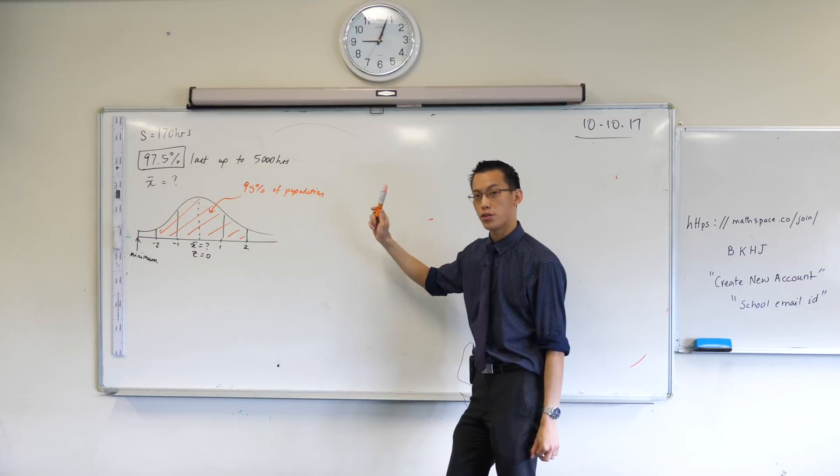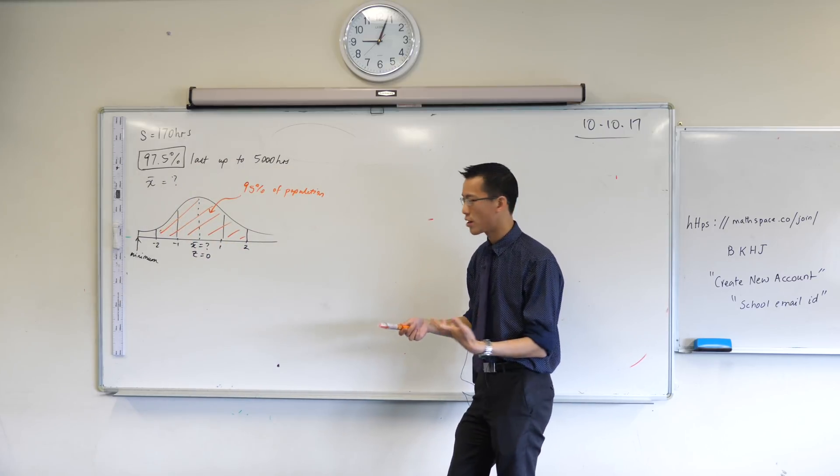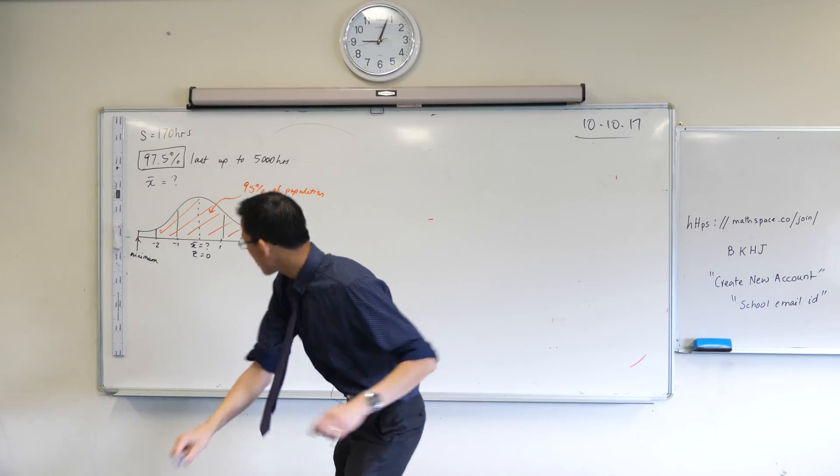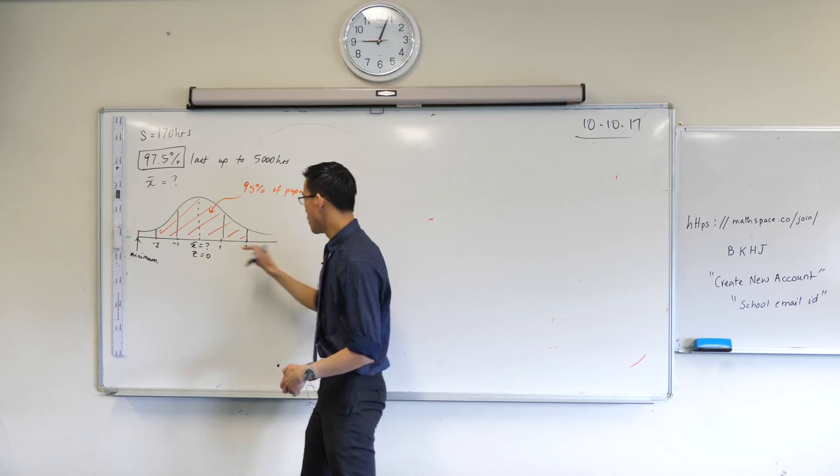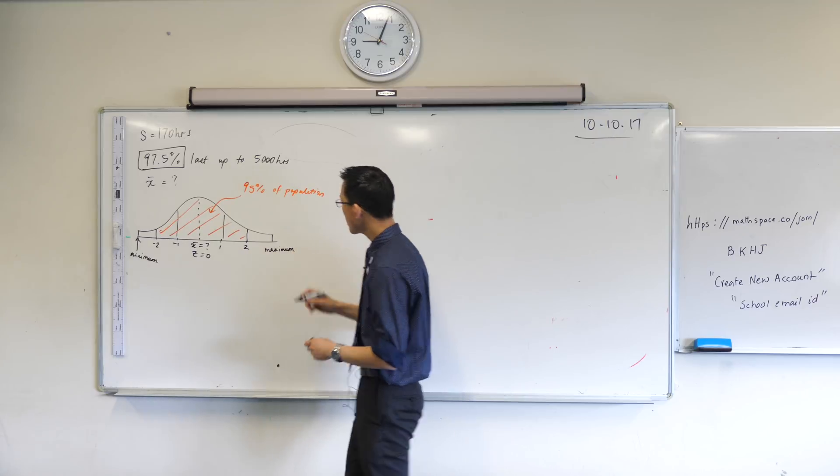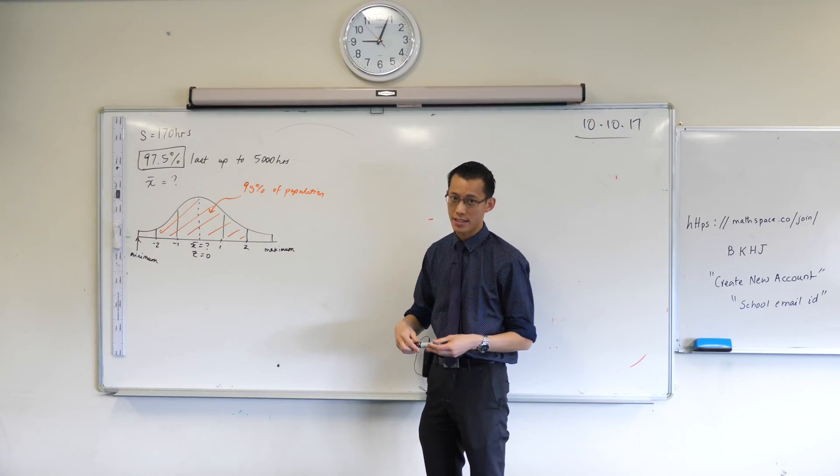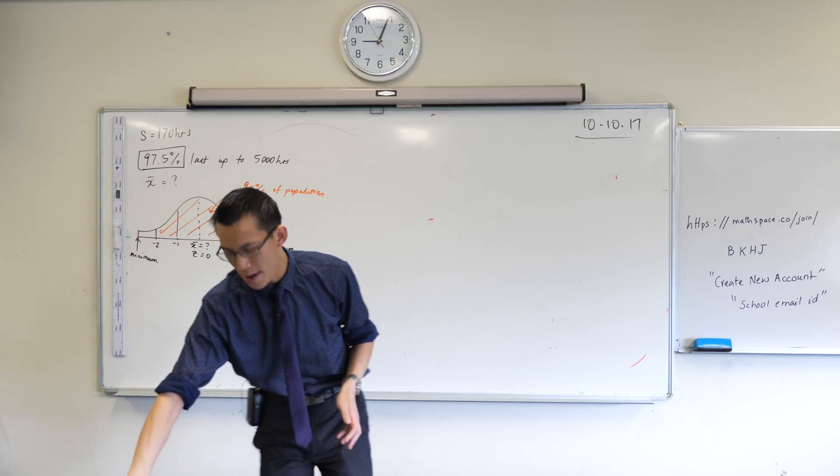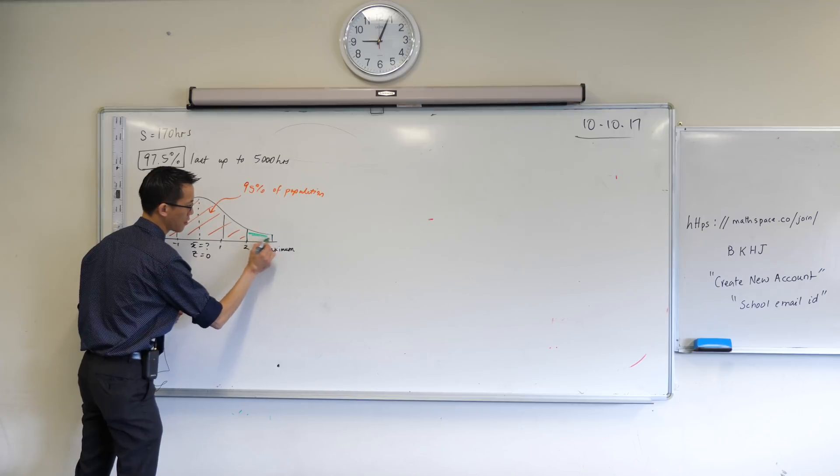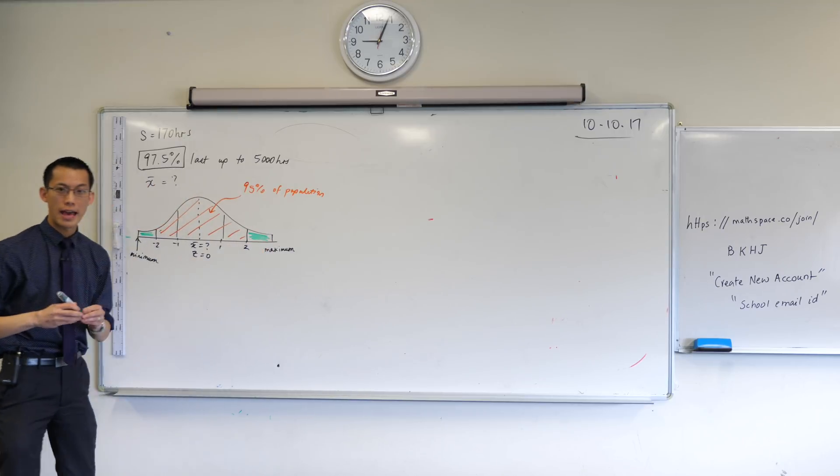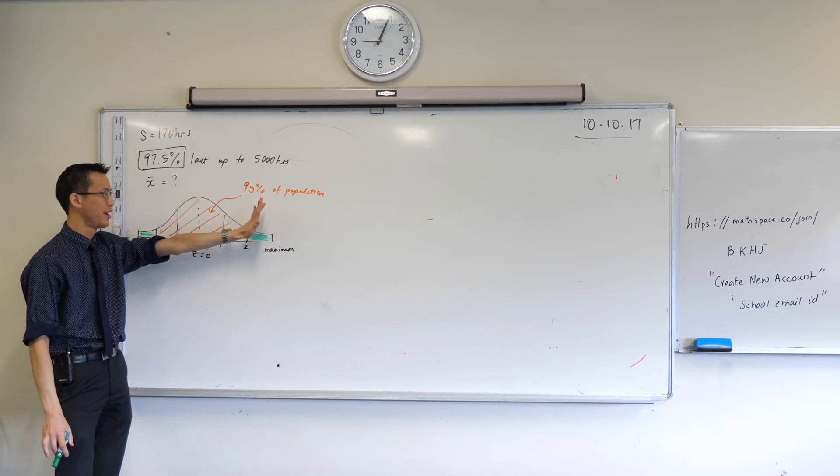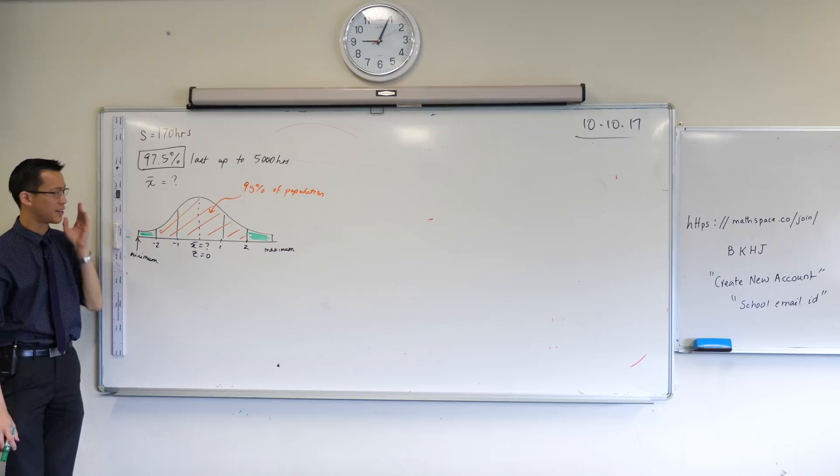Where does the missing 2.5% come from? Well, recall you've got a minimum and also a maximum somewhere up here. If what I have colored in orange is 95%, then you also have these little other sections here and here, which are everyone else—the really above-average light globes and the really below-average light globes.